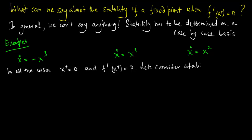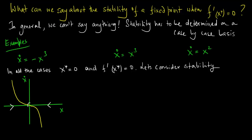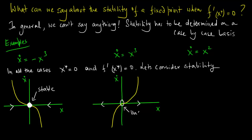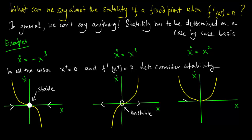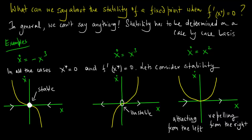Plotting x_dot versus x for x_dot = −x³, we find an attracting, stable fixed point. For x_dot = x³, the plot reveals an unstable fixed point. The last case, x_dot = x², presents an interesting situation: the fixed point is attracting from the left but repelling from the right — stable on one side and unstable on the other. This is called a half-stable fixed point.